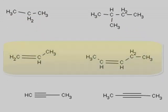The two compounds in the middle of the screen are called alkenes. Alkenes can be distinguished because they have at least one carbon-carbon double bond.